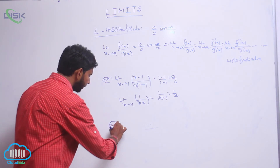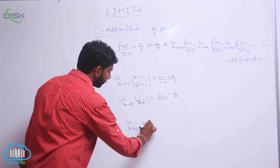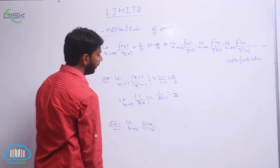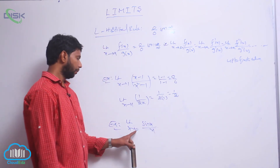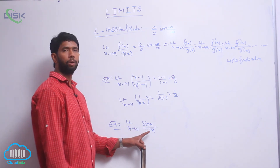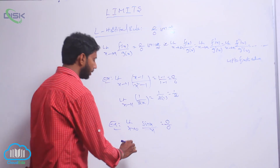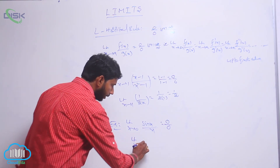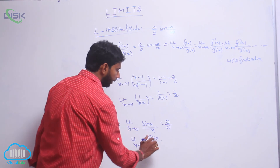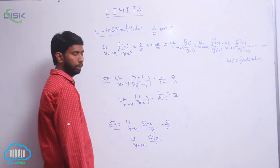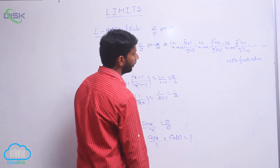Next example: limit extends to 0 of sin(x)/x. Substituting x = 0 gives sin(0)/0 = 0/0 form. Apply L'Hôpital's Rule — limit extends to 0: derivative of sin x is cos x, derivative of x is 1, giving cos(0)/1 = 1.